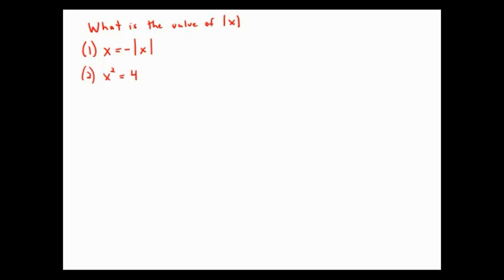The prompt asks what is the value of the absolute value of x. Statement number one says that x equals negative the absolute value of x, and so of course the only way that's going to happen is if x is a negative number.